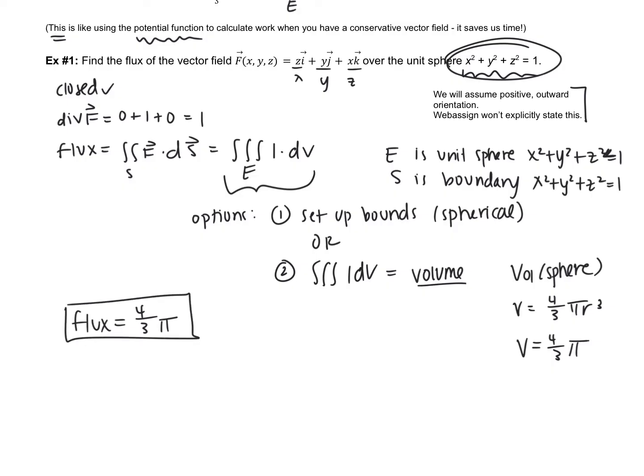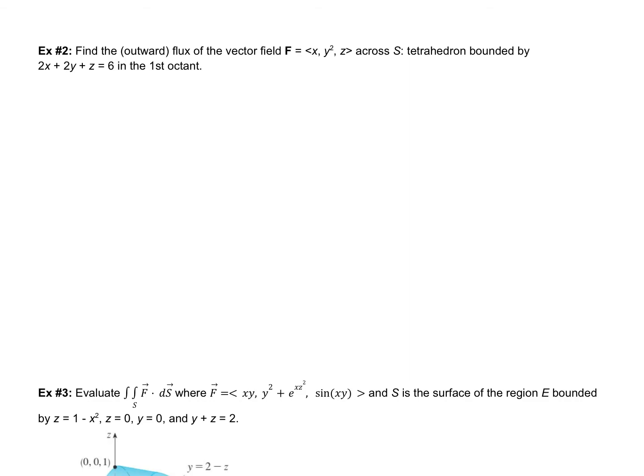So, let's take a look at a few more examples. To find the outward flux of the vector field F across S, which is the tetrahedron bounded by 2x add 2y add z equals 6 in the first octant. Okay, so, what I'm going to do is I'm going to start by drawing myself a figure. So, I'm going to draw our region. This is a plane in the first octant. So, our z-intercept is 6, our x-intercept is 3, and our y-intercept is 3. So, we are looking at this closed solid.